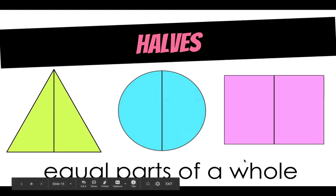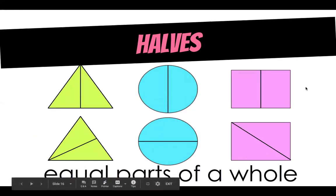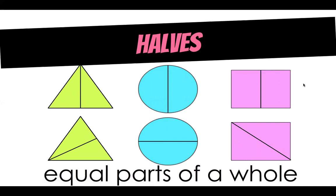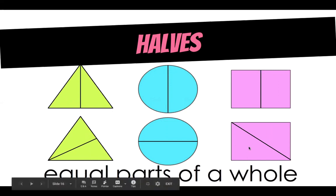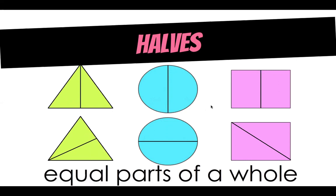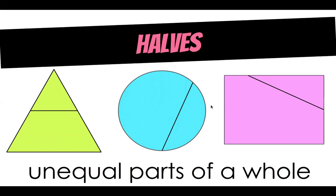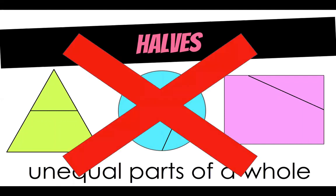Halves are equal parts of a whole and they can look different ways — equal parts don't have to be split up the same way as long as they're equal. These two shapes are still the same size, and so are these two parts. What isn't a half is when it's an unequal part — this part is a lot smaller than that one. That is not a half; that would be a different fraction or a different part of the whole. These are not halves that we are going to work with this week.